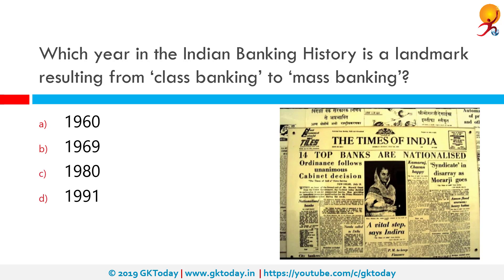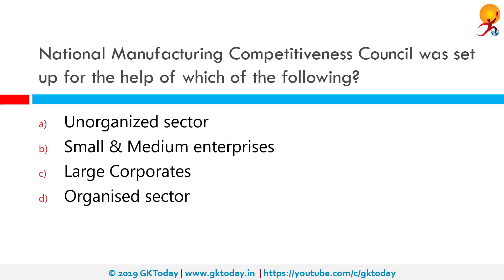Which year in Indian banking history is a landmark resulting from class banking to mass banking, bringing banks to the common people? The correct answer is 1969. The Government of India issued an ordinance known as the Banking Companies Acquisition and Transfer of Undertakings Ordinance 1969 and nationalized the 14 largest commercial banks with effect from midnight of 19 July 1969. These banks contained 85 percent of bank deposits in the country.